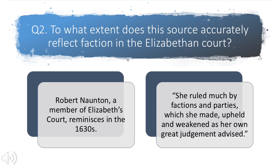Question two asks us about accuracy. So let's imagine we have this question based upon the content we've been looking at recently: to what extent does this source accurately reflect faction in the Elizabethan court? The source is by a man called Robert Norton, a member of Elizabeth's court, writing in the 1630s — that's 27 years after she died. In a nutshell, what he's saying is that her court was dominated by faction.